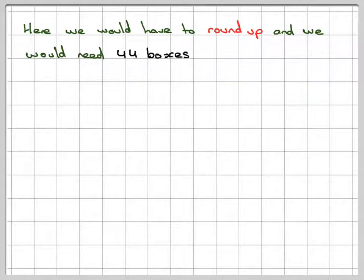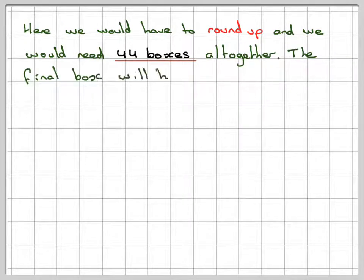So the answer is here we would have to round up and we would need 44 boxes altogether. The final box would have just two cakes in it.